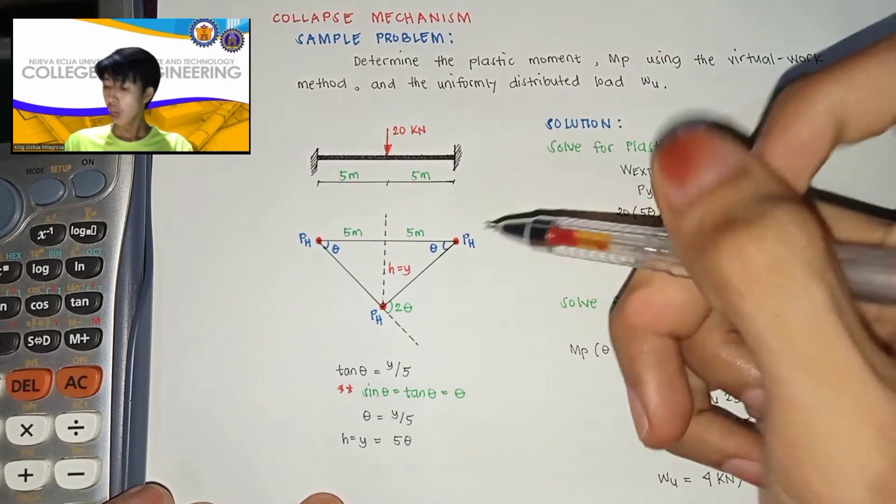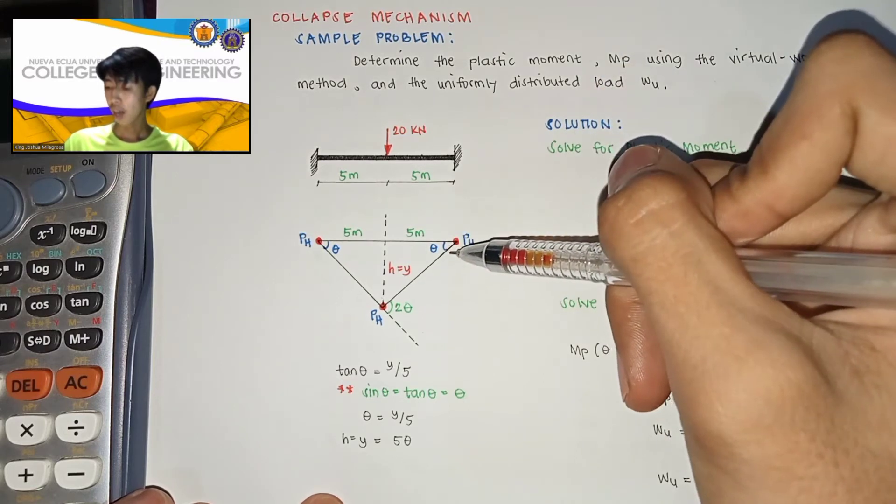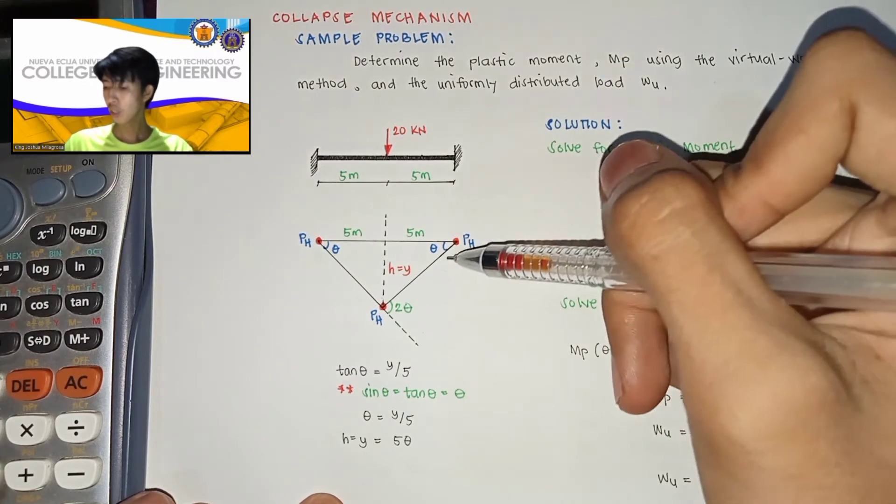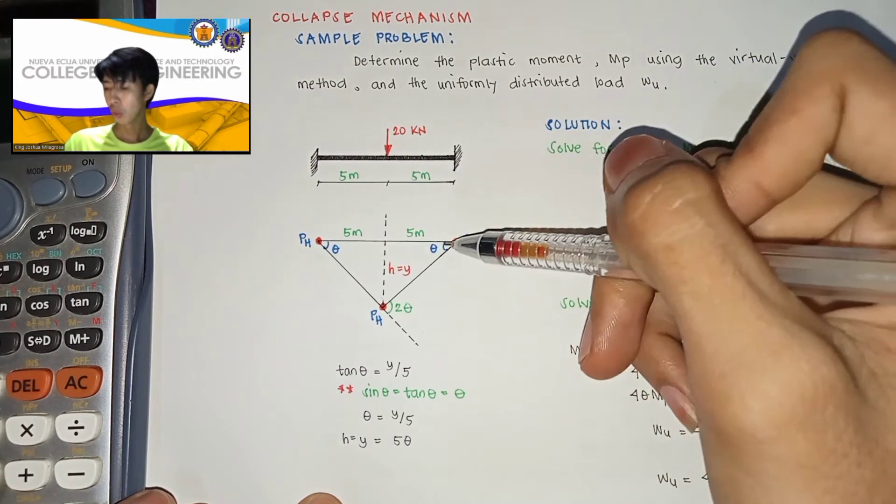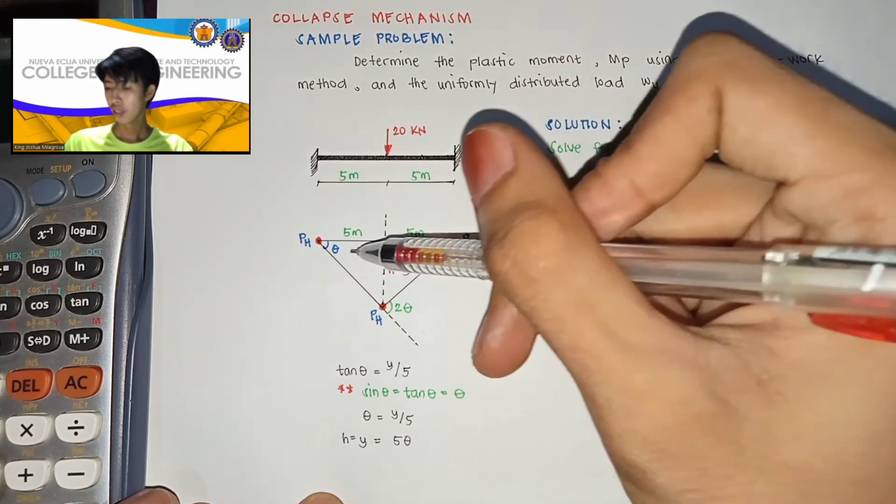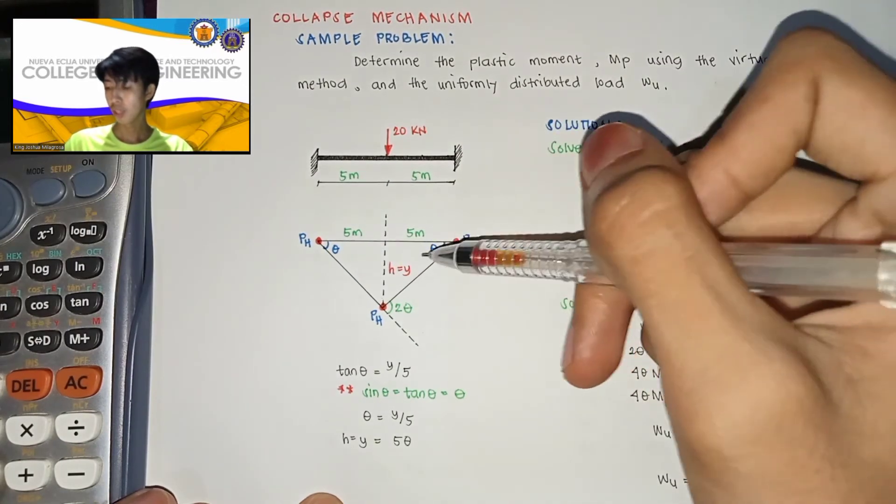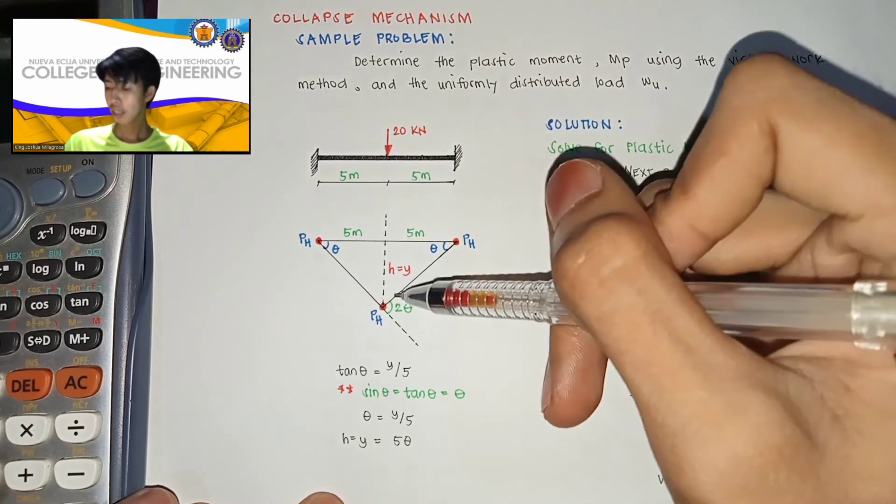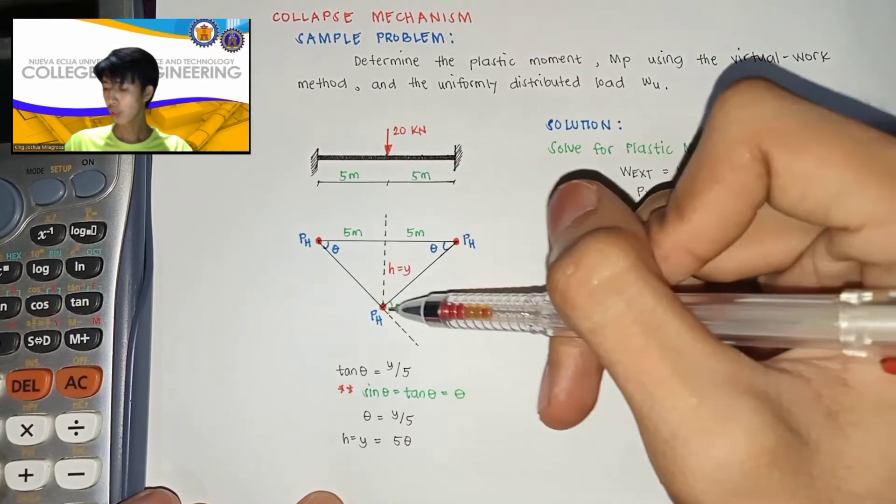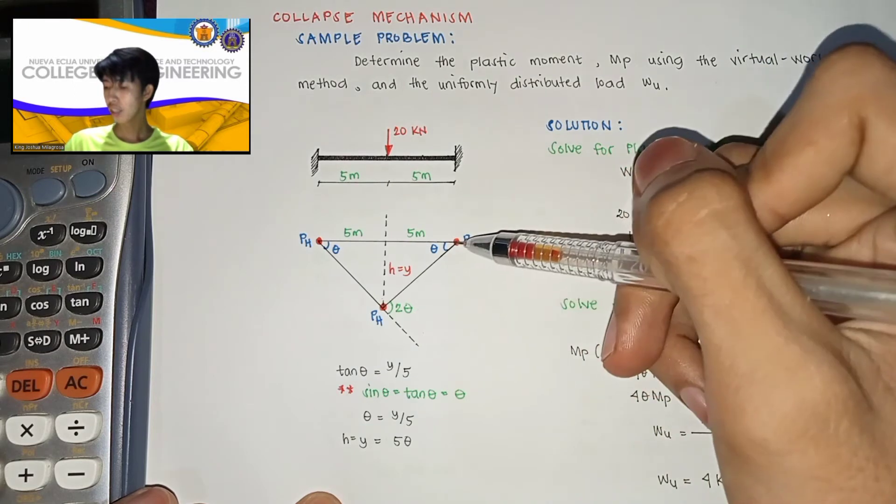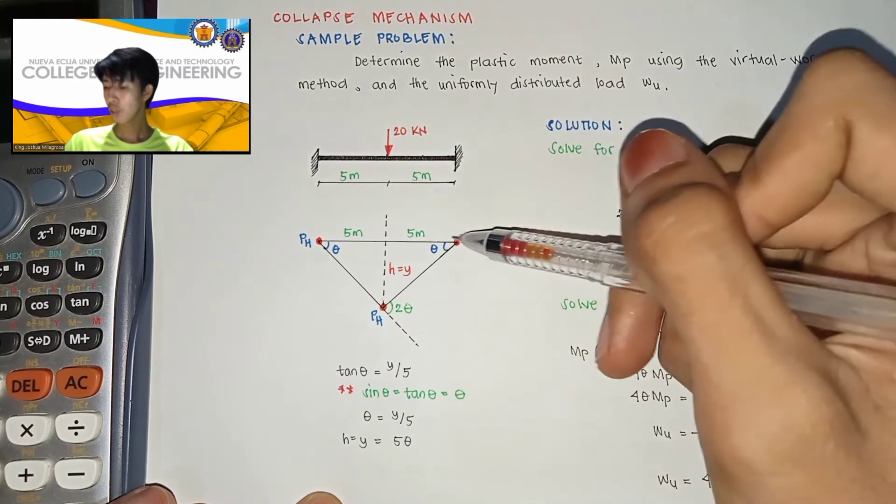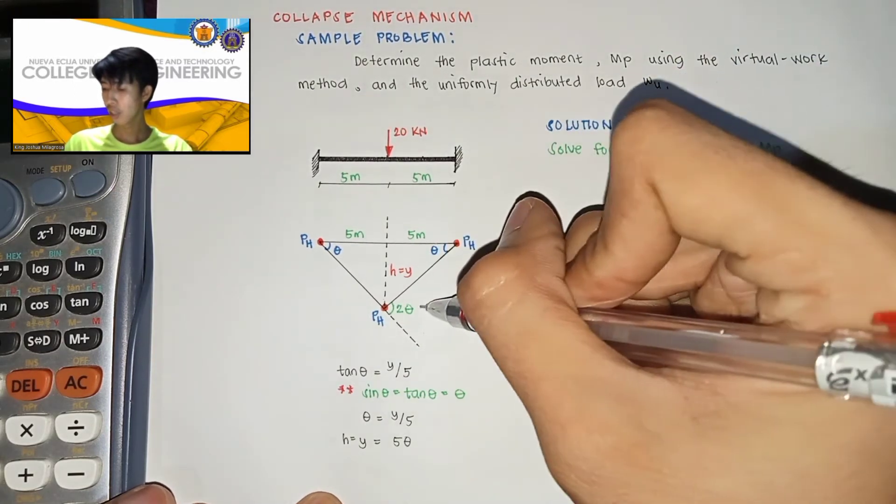For our theta or angle, since equal naman siya, kasi sa gitna naman nag-act yung load, so theta and theta yung both sides nya. Then pag in-extend naman natin itong line na ito, magkakaroon tayo ng 2 theta since pag-project lang natin yan or naglagay tayo dito ng line.